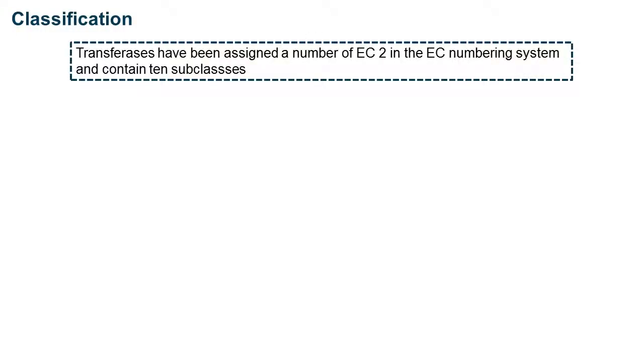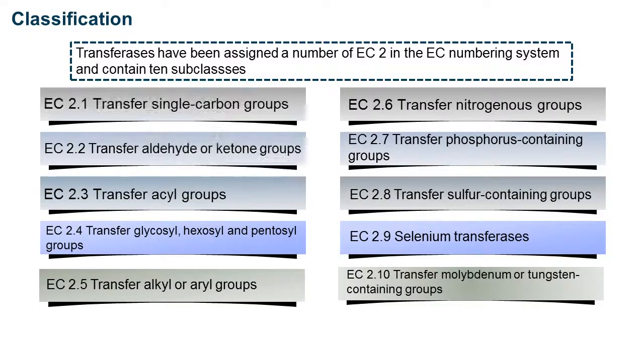Transferases have been assigned the number EC2 in the EC numbering system and contain 10 subclasses.